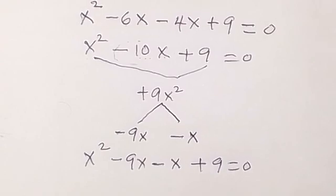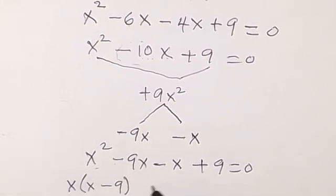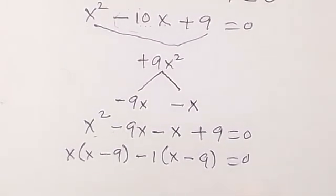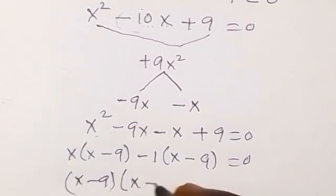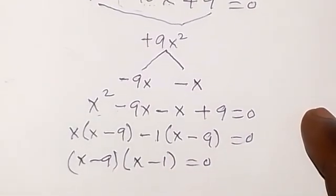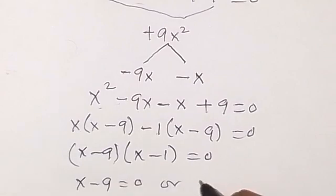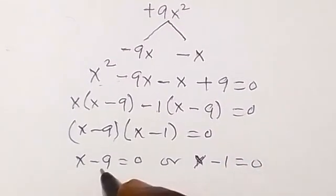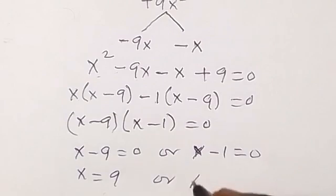We replace minus 10x with minus 9x minus x, giving us x squared minus 9x minus x plus 9 equals to 0. Factoring, we get x(x minus 9) minus 1(x minus 9) equals 0, so (x minus 9)(x minus 1) equals 0. Therefore x minus 9 equals 0 or x minus 1 equals 0, giving x equals 9 or x equals 1.